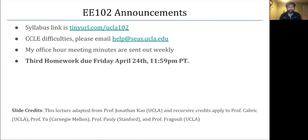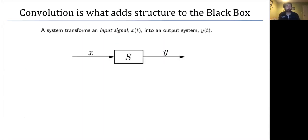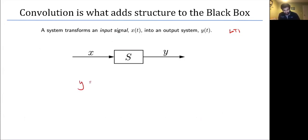Hello and welcome to another lecture of W102. Remember that your third homework is due this Friday at 11:59 PM Pacific time. Last time we said that if the system is LTI, then convolution adds structure to the output, and we can write the output y as a convolution of the impulse response h(t) with the input — that was the key finding from last lecture.